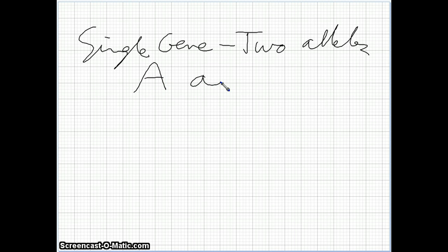The first one we have talked about already at quite a length, which is a single gene that has two alleles. And in this case, these two alleles are either dominant, such as a big A, or recessive, like a little a.